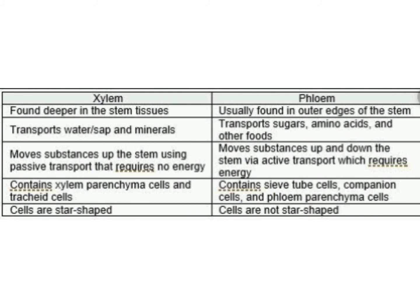In xylem, substances move up the stem using passive transport, but in phloem it is active transport. The xylem vessel contains xylem parenchyma cells and tracheate cells, but phloem contains sieve tube cells, companion cells, and phloem parenchyma cells.